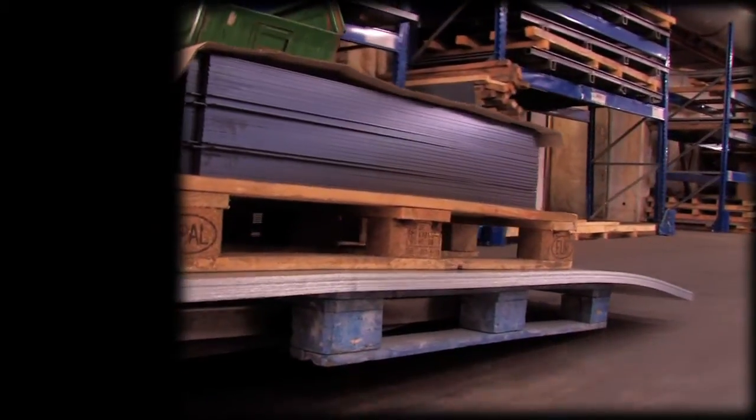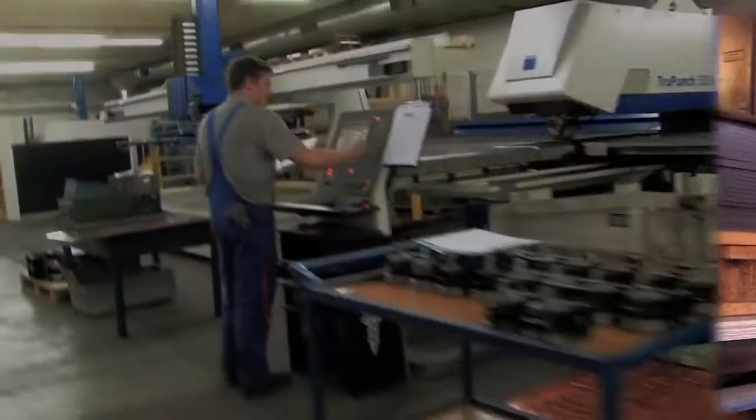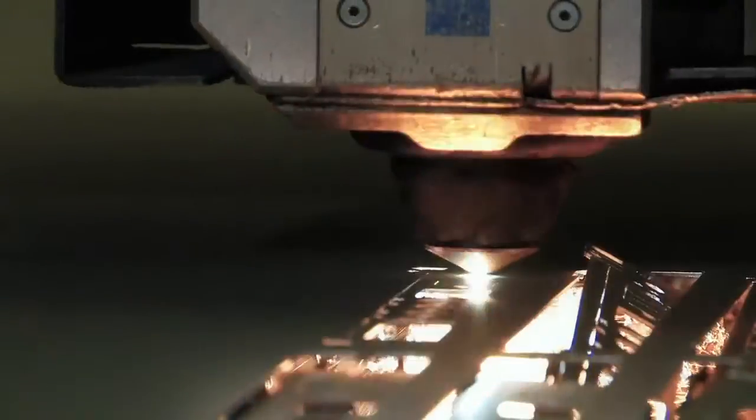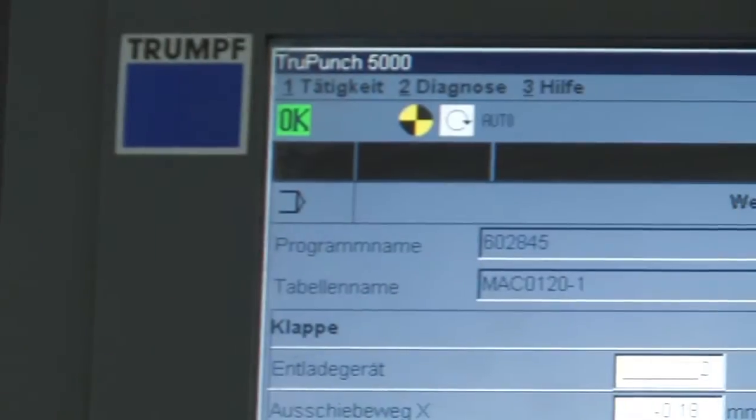Every stove starts out as a simple sheet of metal. This is cut with lasers in a fully automatic process that is accurate to a tenth of a millimeter. The necessary data for this is created using state-of-the-art 3D drawing programs.